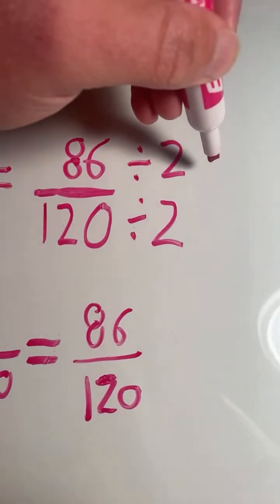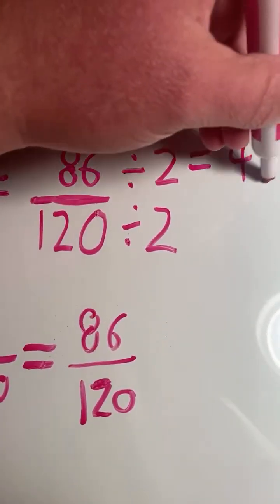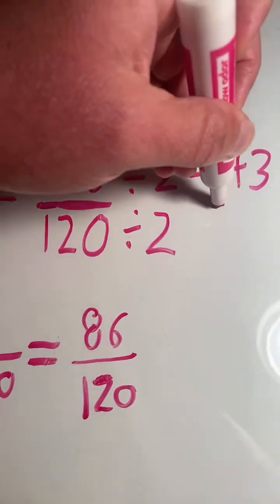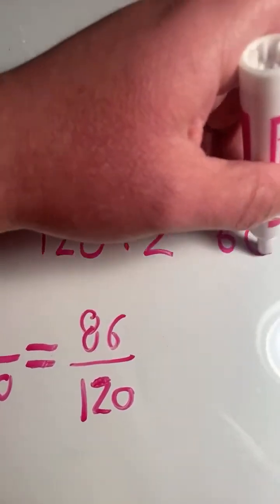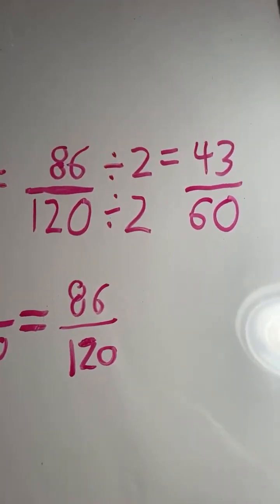86 divided by 2 equals 43. 120 divided by 2 equals 60. So our reduced answer is now 43 sixtieths.